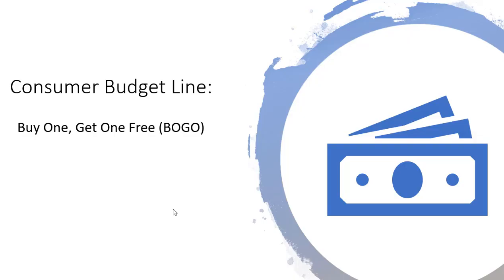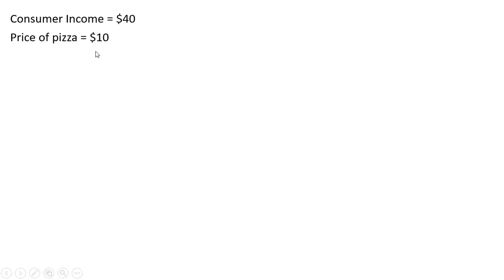Hello, in this video we're going to look at the consumer budget line and take into account a buy one get one free offer (BOGO). The consumer has an income of $40, the price of pizza is $10, and the price of MP3 songs is $2. We're going to look at the consumer's budget line under this scenario and then incorporate a buy one get one free offer for pizza.